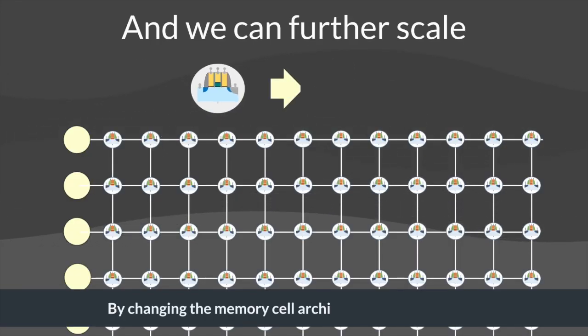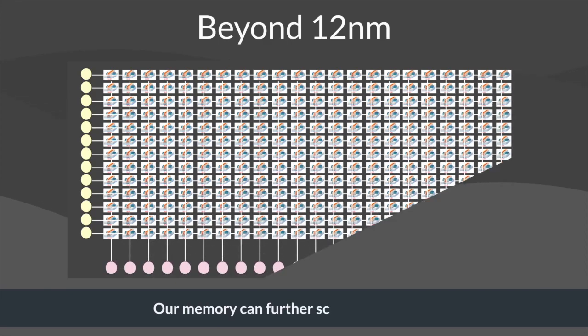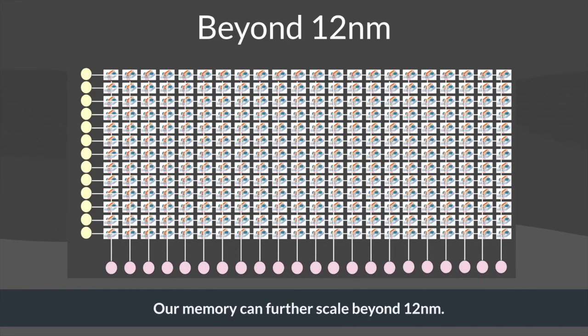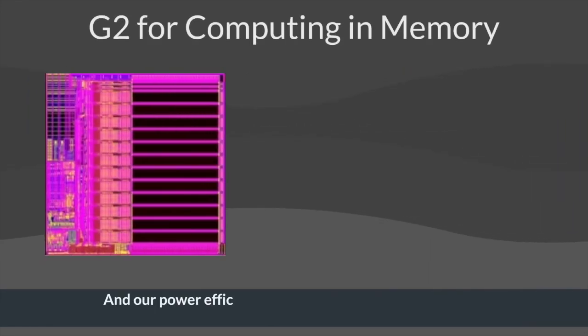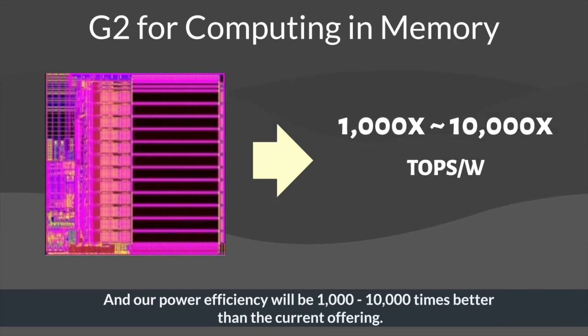By changing the memory cell architecture to the next level, our memory can further scale beyond 12 nanometers, and power efficiency will be a thousand to ten thousand times better than the current offerings.